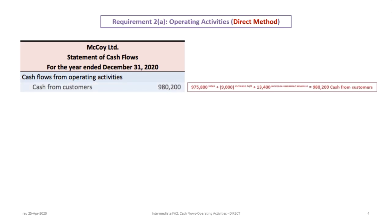Our first item is cash received from customers. To determine this, we go to the income statement where we find sales — that's a positive cash inflow. Everything added is an inflow; anything in brackets is a cash outflow. We start with $975,000 in sales, then deduct an outflow of $9,000 for the increase in accounts receivable, using the same approach as the indirect method.